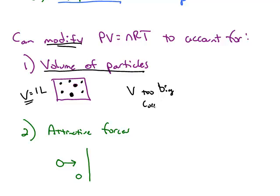So the measured volume of the box is too big. And when we make a correction, the correction term is going to be negative.